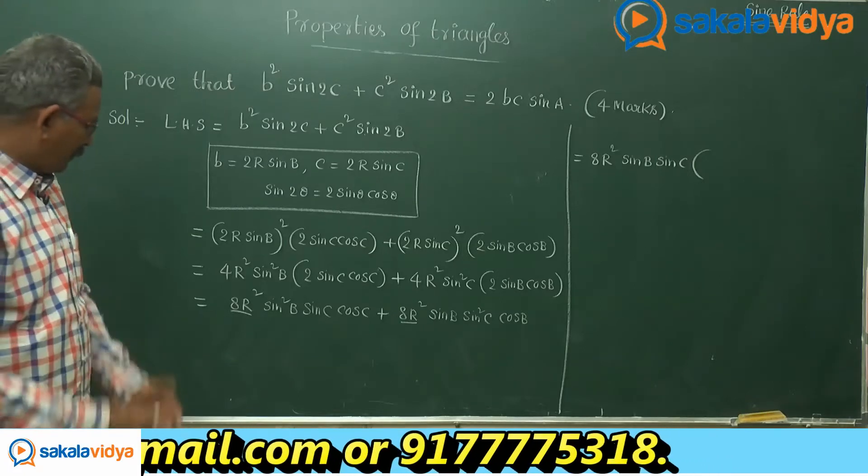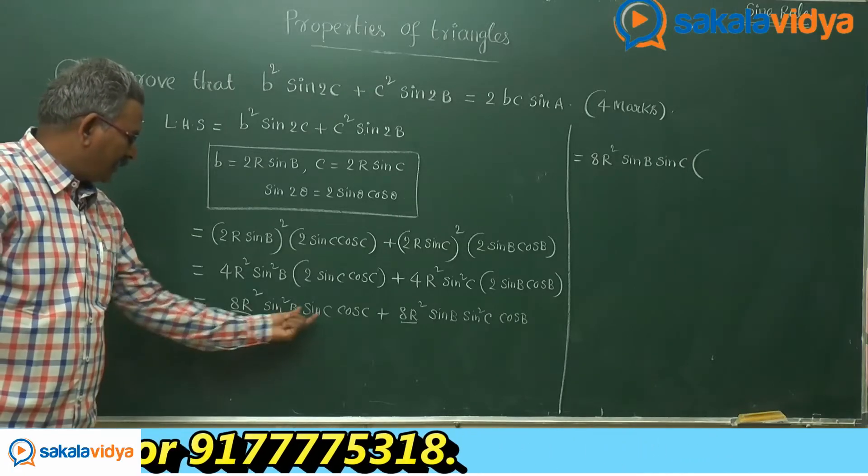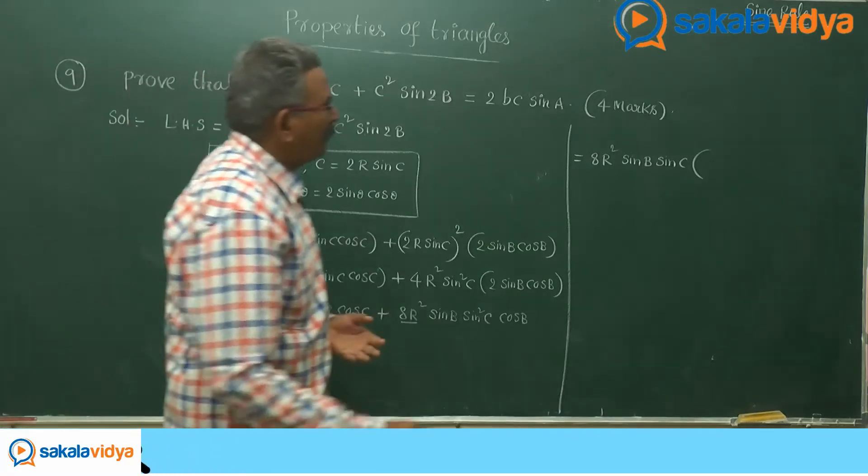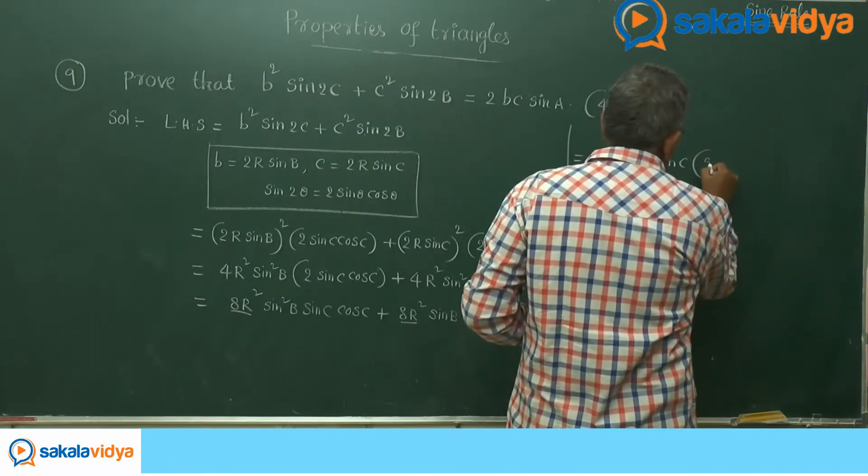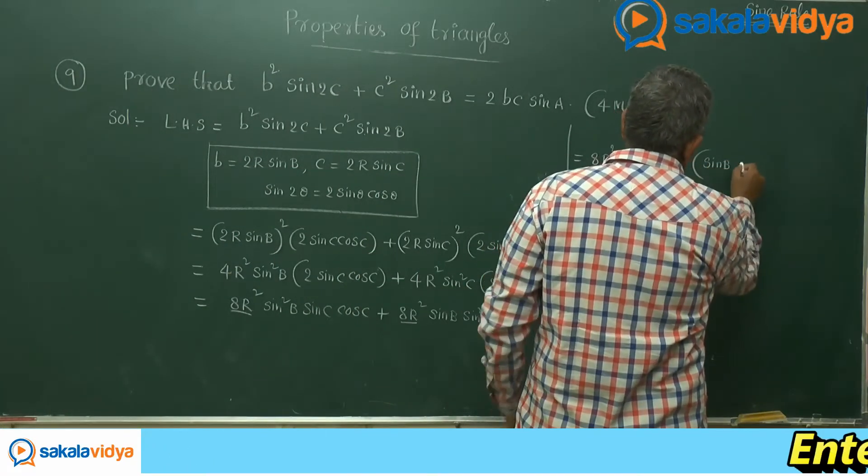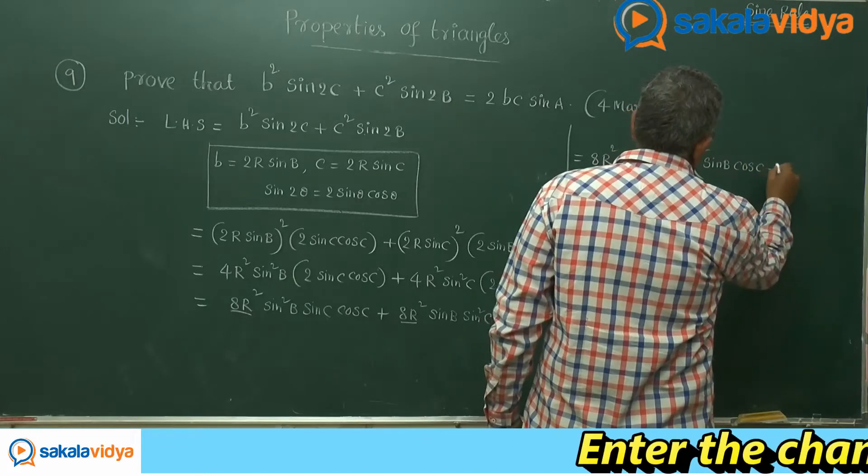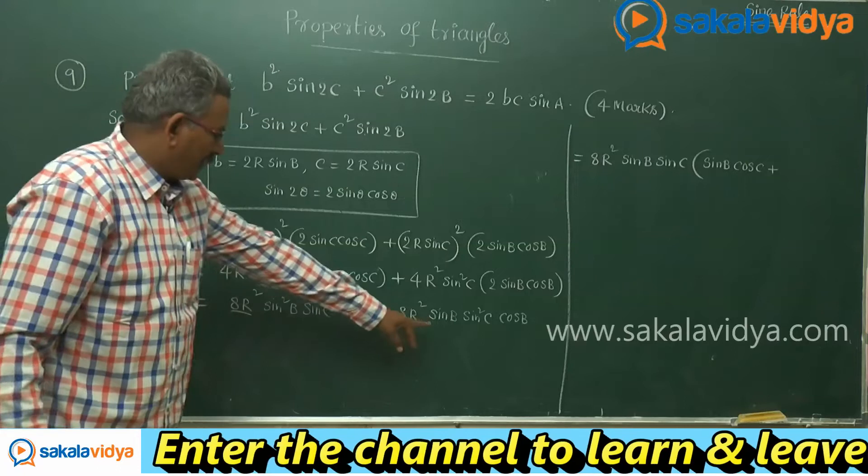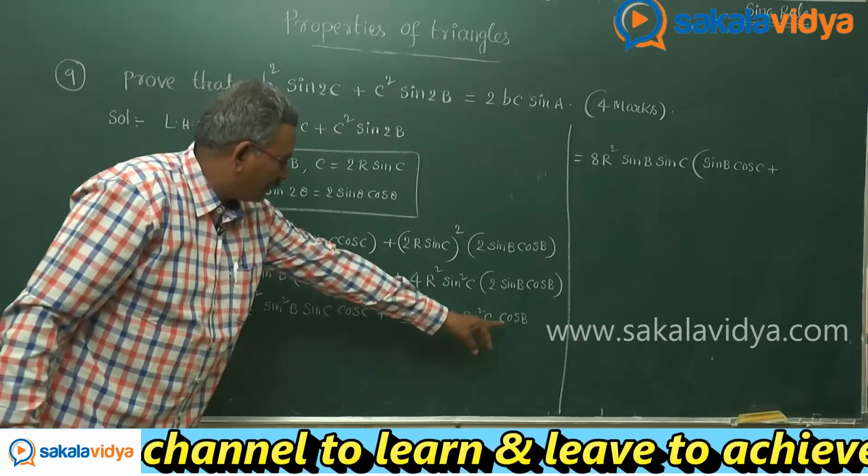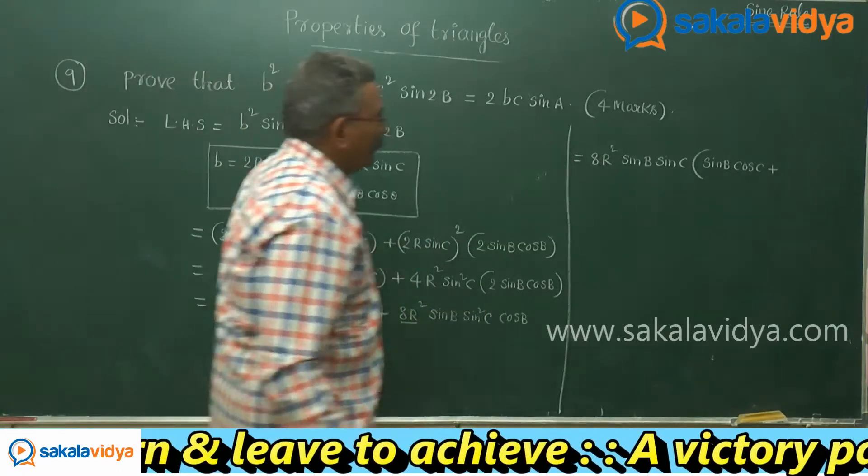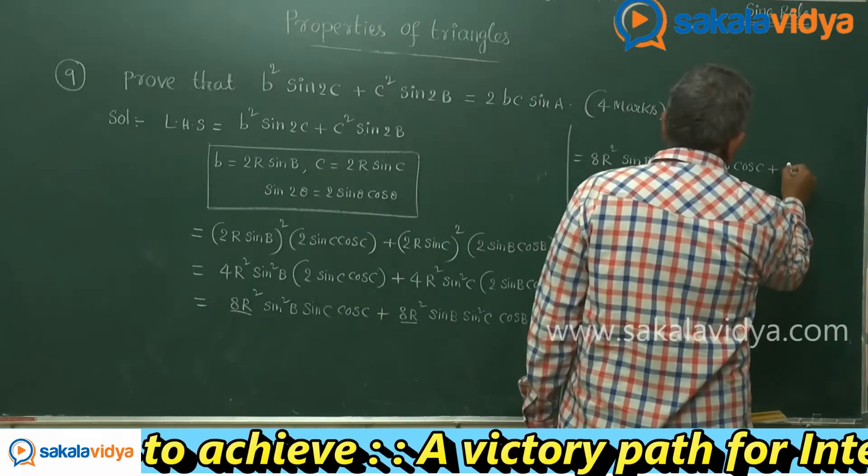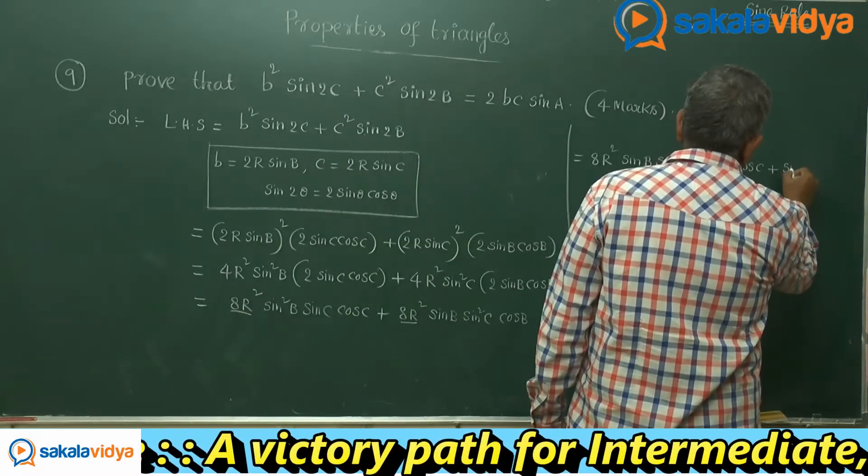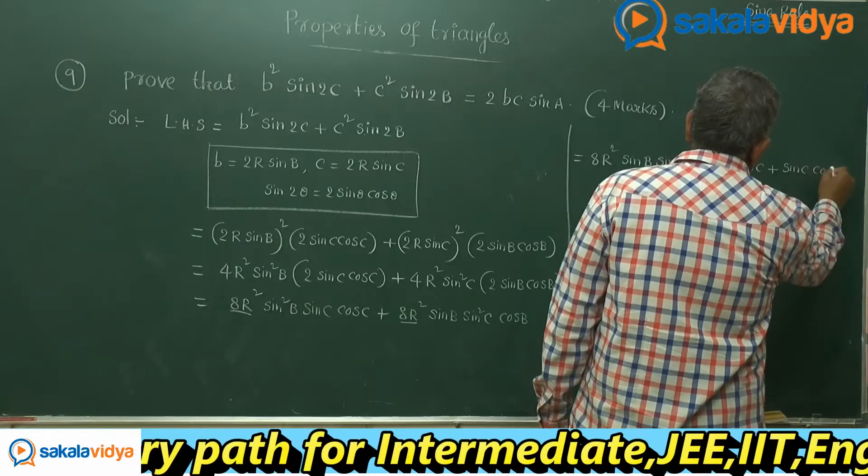That means sin b and sin c is taken out, cos c is there. We get sin b cos c plus, here what do you get now? See, sin b is taken out, we have sin c cos b, sin c cos b.